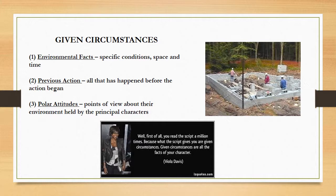First, the environmental facts — the specific conditions of place and time. Second, the previous action — all that has happened before the action begins. And third, polar attitudes — the points of view towards the environment held by the principal characters, and those attitudes that change over time throughout the play. When we see a play, we can ascertain usually only a very small amount about the given circumstances from what we see visually on the stage. Almost everything we learn about given circumstances comes directly from the playwright's words, the dialogue. Given circumstances are a matter of feelings about objects and places, about time and what has happened before the play begins, and about the feelings of the characters for the special world of the play.